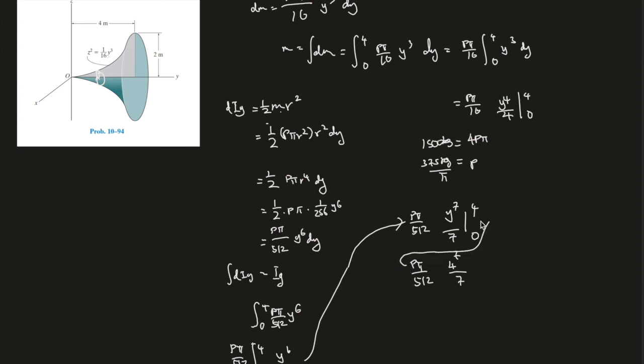Look at density. We've already found density. What is that? ρ equals to this. So, we can plug that in there, 375 times π over π times this. So, this cancels out, and times 4 to the power of 7 over 7, right?